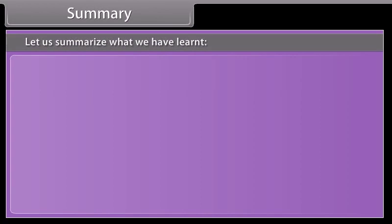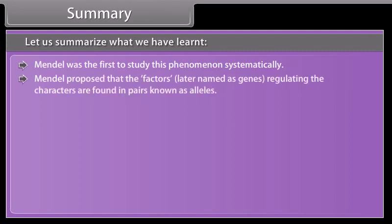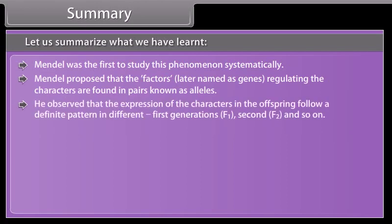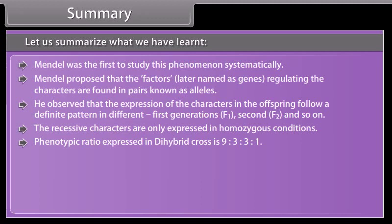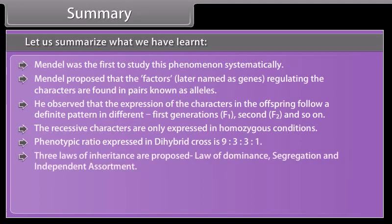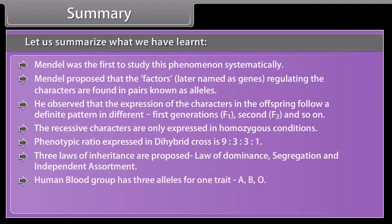Summary. Mendel was the first to study this phenomenon systematically. Mendel proposed that factors, later named genes, regulating the characters are found in pairs known as alleles. He observed that the expression of characters in offspring follows a definite pattern in F1, F2 generations, and so on. Recessive characters are only expressed in homozygous conditions. The phenotypic ratio in a dihybrid cross is 9:3:3:1. The three laws of inheritance are: Law of Dominance, Segregation, and Independent Assortment. Human blood group has three alleles for one trait: A, B, and O. Incomplete dominance occurs when neither allele for a certain trait is dominant.